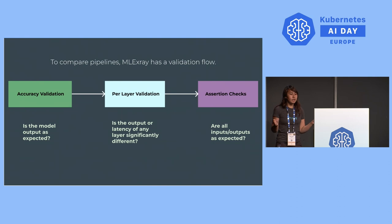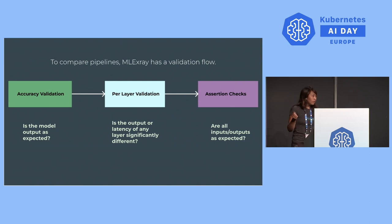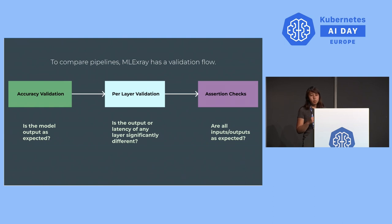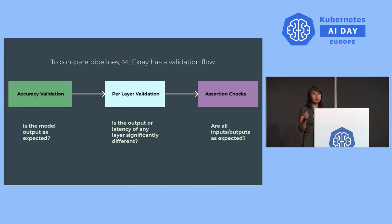The basic flow of this debug report starts with accuracy validation. You look at accuracy for your reference pipeline and your development pipeline — are they matching up? If they match, that's great. But in many cases the accuracy goes down. Then you look into each layer specifically, checking if any layer's output is very different from the reference pipeline's output. In the case where things are slow, you compare latency — identifying which layer took much longer in your development pipeline.